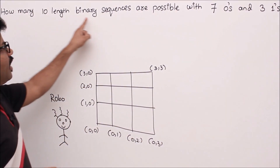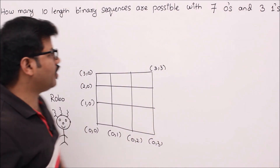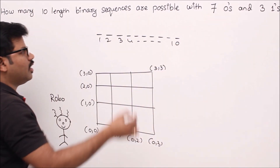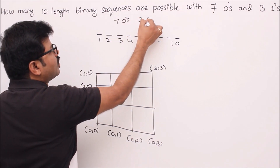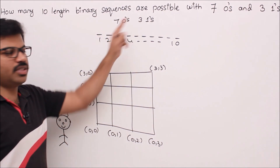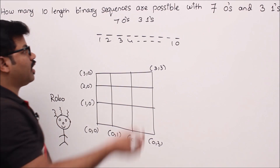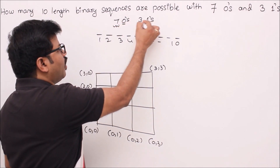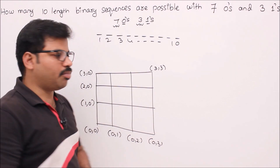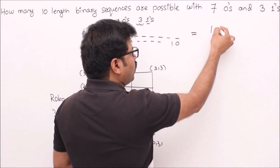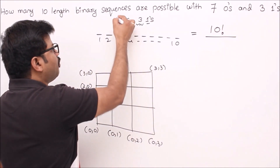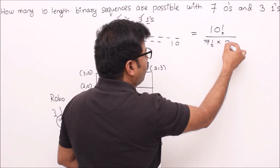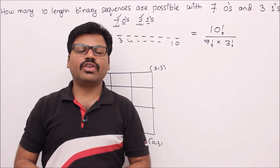Question 1: how many 10-length binary sequences are possible with 7 zeros and 3 ones? You have 10 positions, 7 zeros and 3 ones — it's an arrangement of 10 objects with duplicates. If all were different the answer would be 10!, but 0 is repeated 7 times and 1 is repeated 3 times. By template 5, the answer is 10! divided by 7! into 3!.